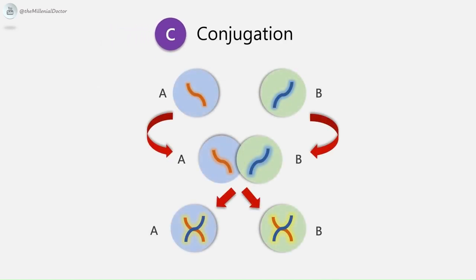Next is conjugation. In ciliates, the sexual process of conjugation involves two organisms joining together and reciprocally exchanging nuclear material — for example, in the parasite Balantidium coli. In a diagram we can see two cells A and B, each with different nuclear material; they come together to exchange it, and at the end both cells contain both parts of the nuclear material. This is temporary fusion of two cells with exchange of nuclear material between them.